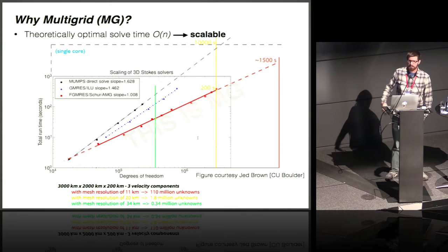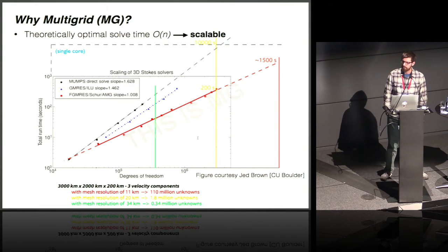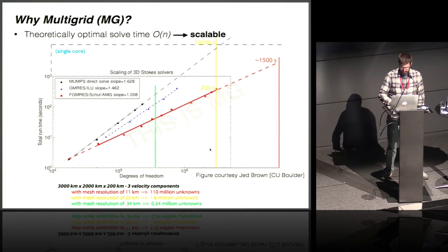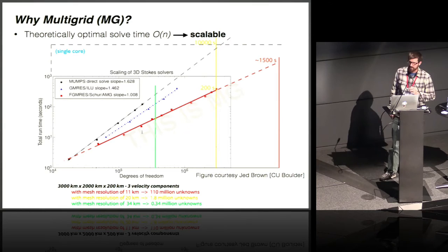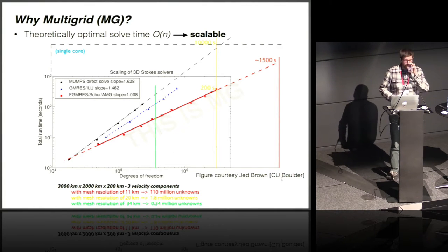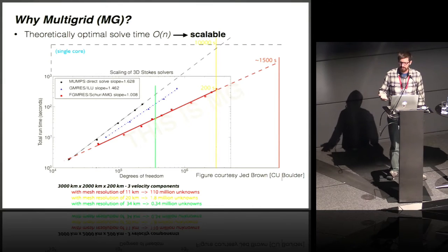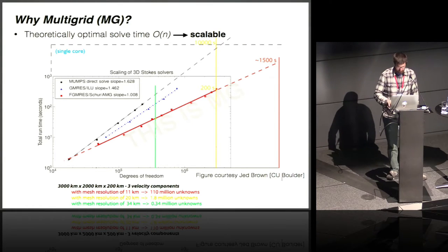Why would we care about multigrid? The main motivation is that it's a theoretically optimal algorithm, at least in the sequential case — it can provably give order-n algorithms to solve interesting PDEs to discretization error. Looking at this chart courtesy of Jed Brown, if we take a 3D Stokes problem and extrapolate the scaling behavior of any other leading solver, once we start getting into even moderately high degrees of freedom — 10^6, 10^8 — multigrid becomes the only viable alternative, justifying significant effort to develop extreme-scale software.